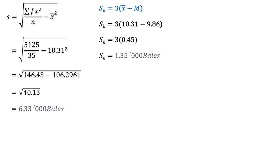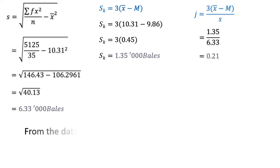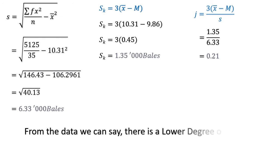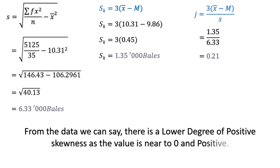In coefficient of skewness we do not show the unit of measurement. The coefficient of skewness J = 3(x̄ − M) / s = 1.35 / 6.33 = 0.21. From the data we have a lower degree of positive skewness because the coefficient is near to zero and positive. I hope you are getting how we calculate Carl Pearson's method of skewness and coefficient. Let's do one last sum and wrap up.